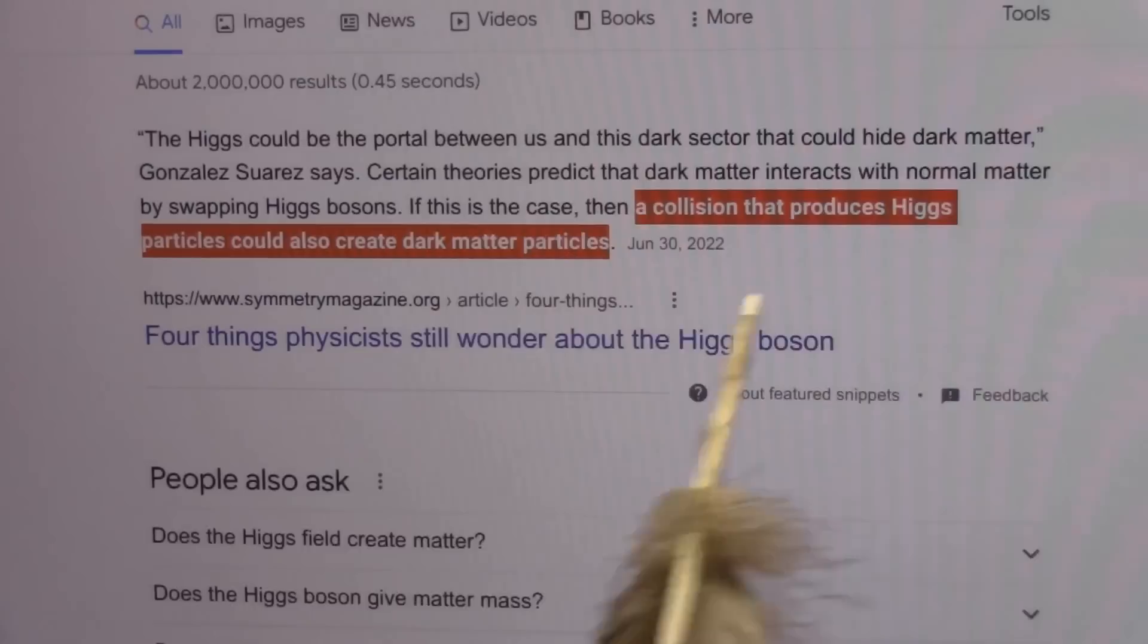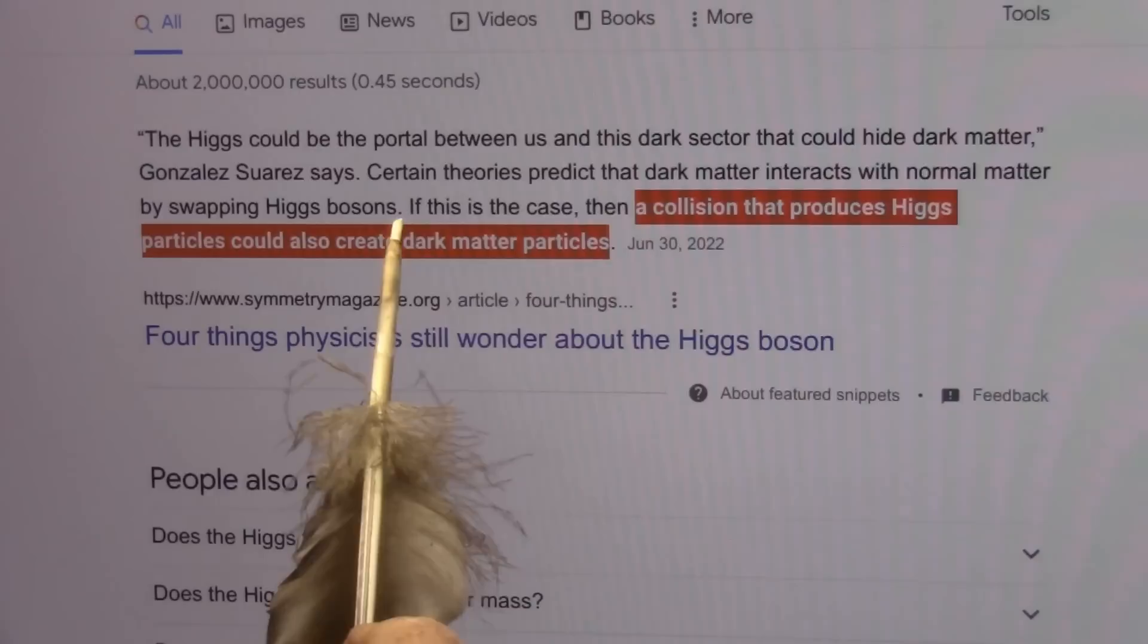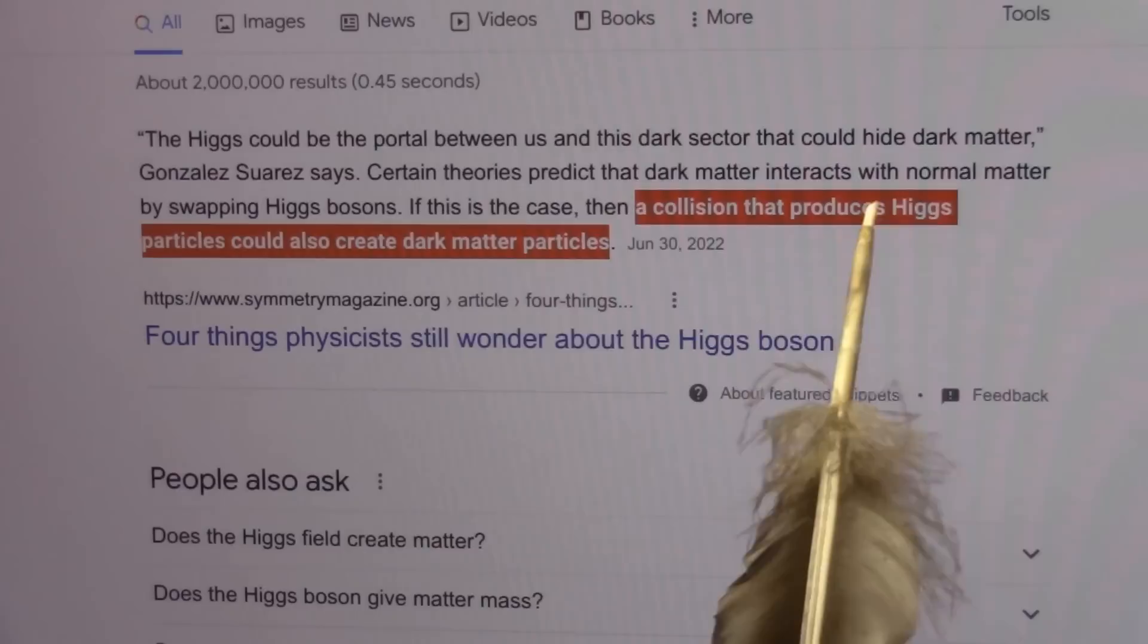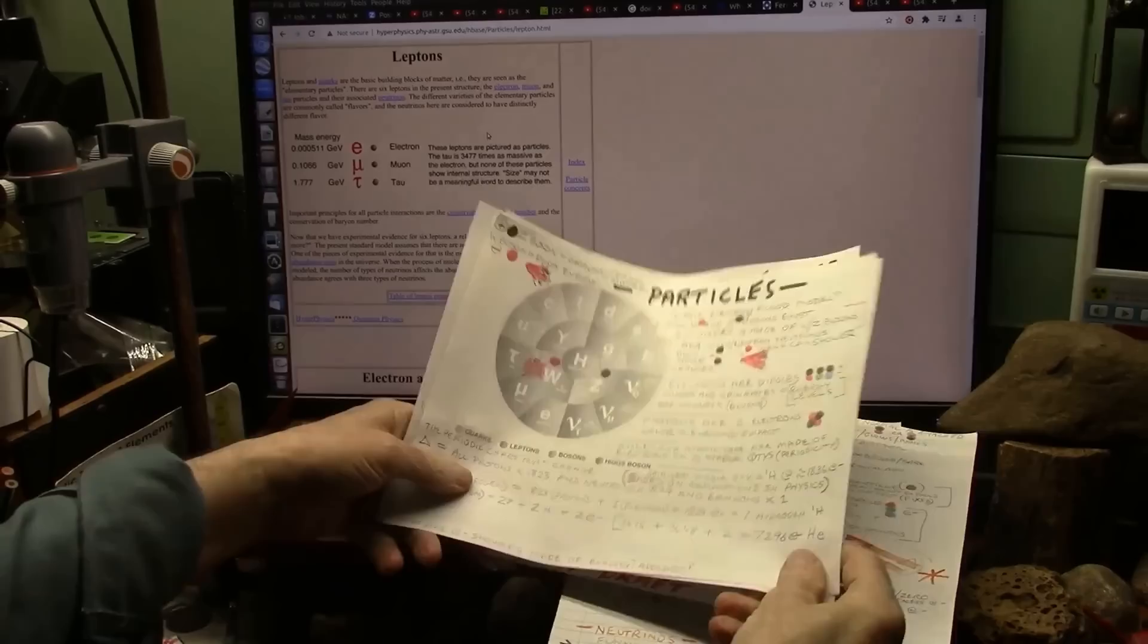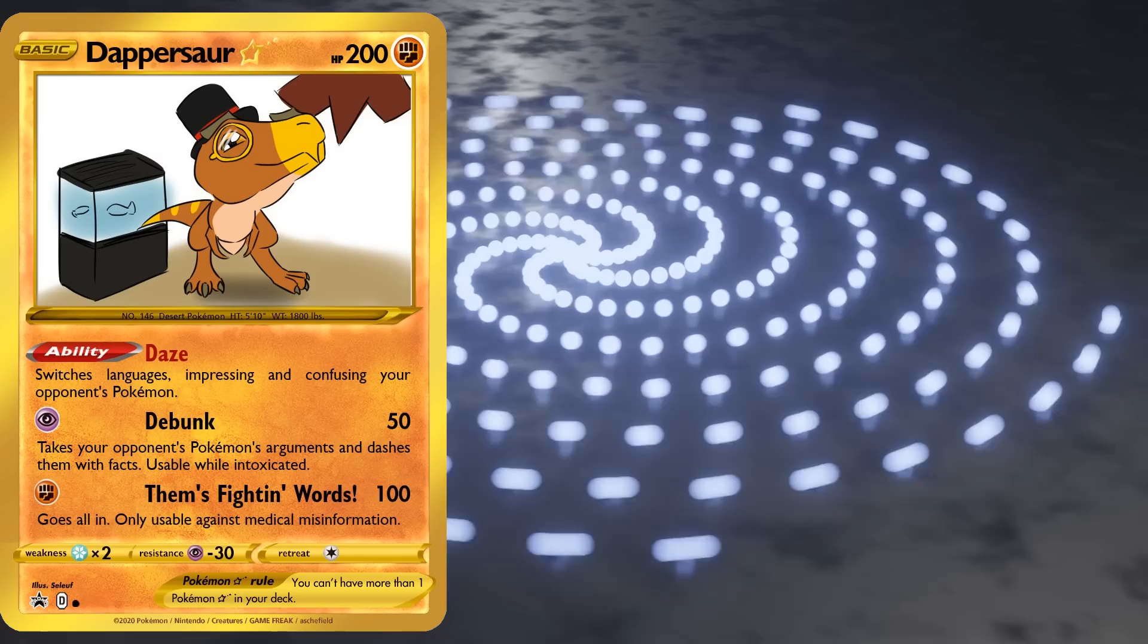Gonzales Suarez says, certain theories predict that the dark matter interacts with normal matter by swapping Higgs bosons. If this is the case, a collision that produces Higgs could also create dark matter particles. And we did that. All right, my theory is extremely simple. They're looking for these W and Z bosons. And now we're on to another topic. This is Matt Powell levels of whiplash here.